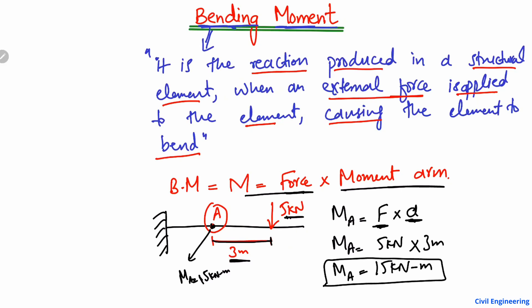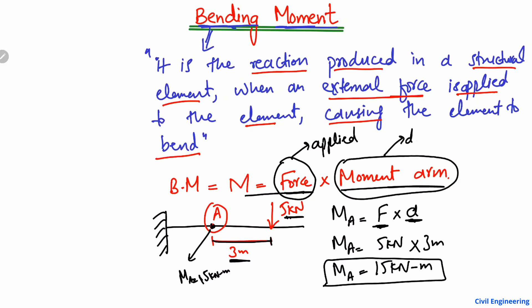In the similar way you can find the bending moment at any point, but you have to know two things: one is the applied load — the force acting on the beam, column, or slab — and the second thing is the moment arm, which is the distance from the load to the point of interest.